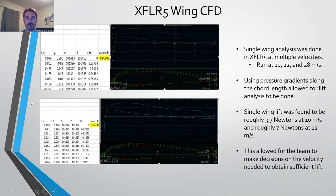This is the XFLR5 wing CFD. Single wing analysis was done at multiple velocities at 10 meters per second, 12 meters per second, and 28 meters per second. Using the pressure gradients along the chord length, we were allowed for lift analysis to be done. The single wing lift was found to be roughly 3.7 newtons at 10 meters per second and about 7 newtons at 12 meters per second. This allowed for the team to make decisions on the velocity needed to obtain sufficient flight.